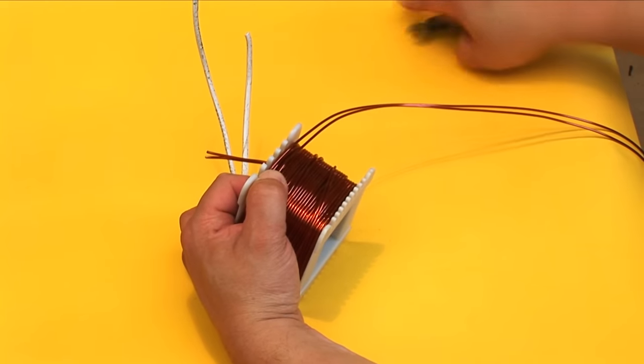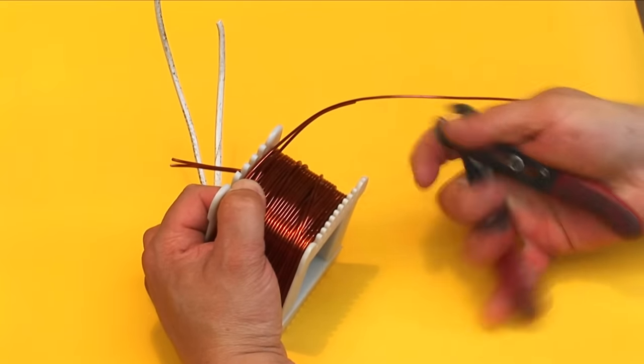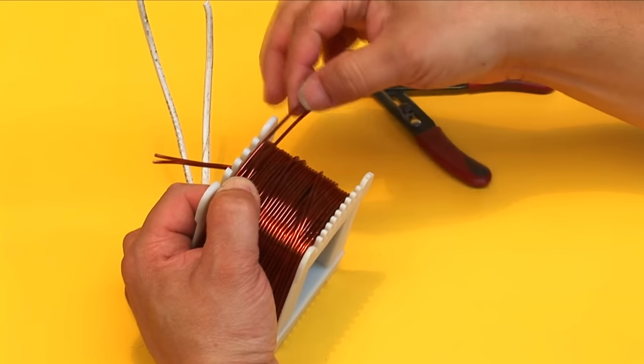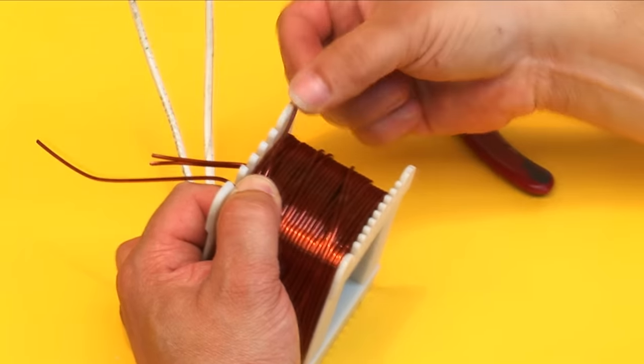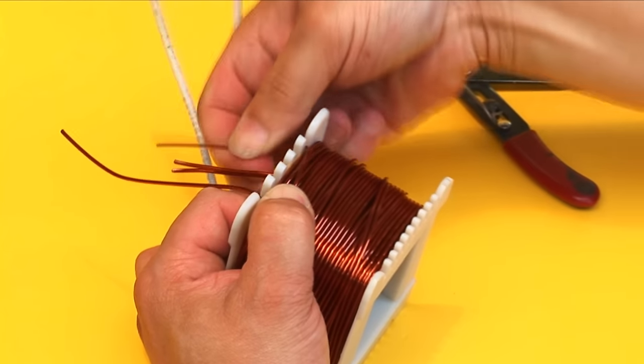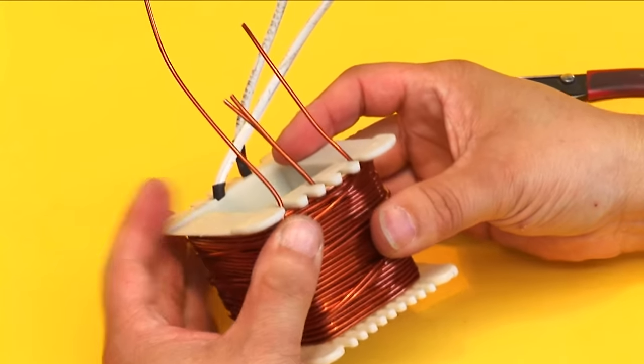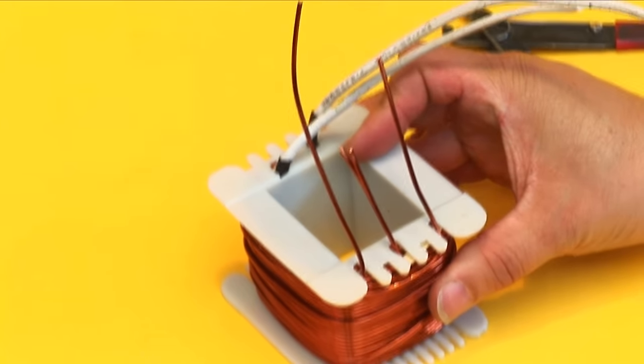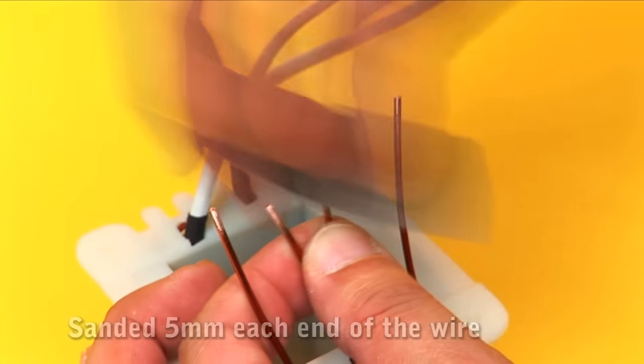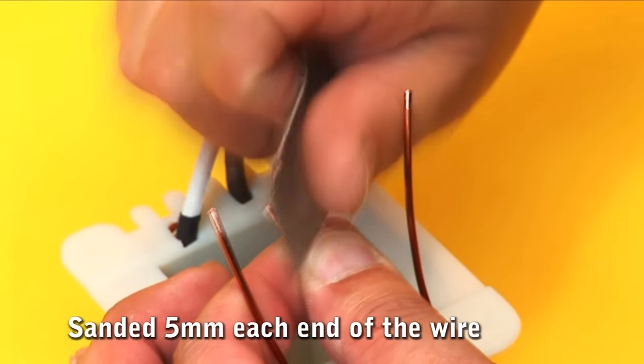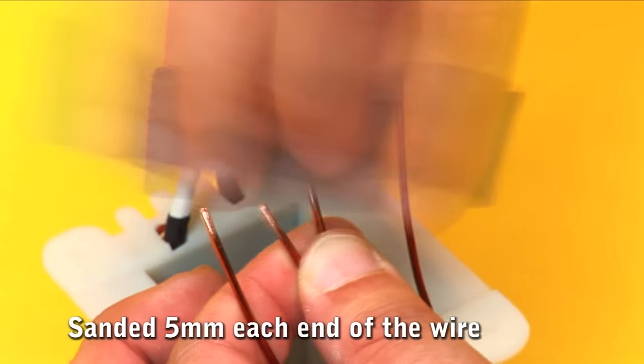At the end of winding, cut the wire and insert the tips of the tail end of the wire in the output slots. We sand the ends of the wire to remove the dielectric isolating layer of varnish.